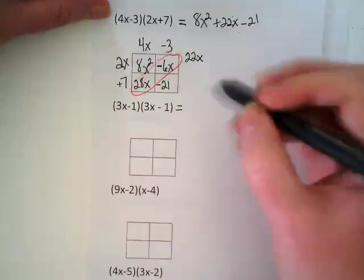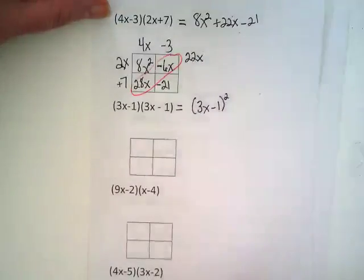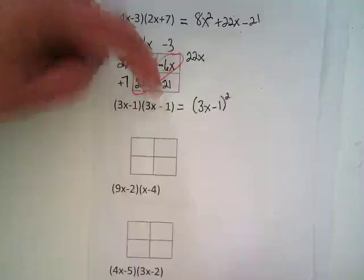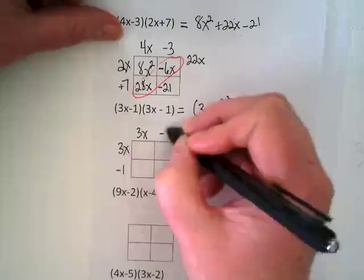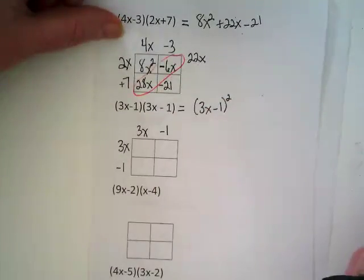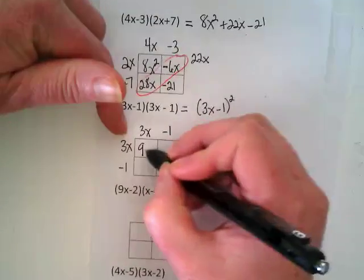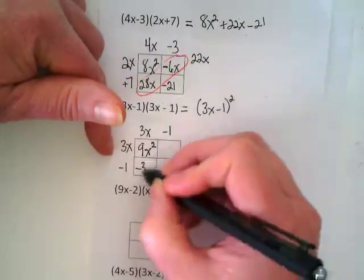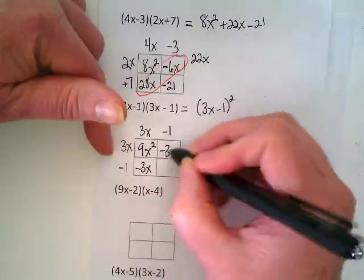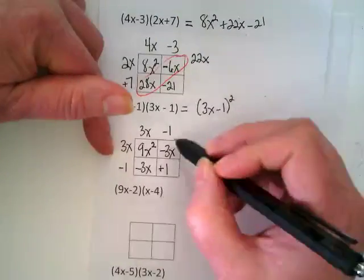This one could be rewritten as 3X minus 1 squared, because both polynomials are the same. So we're going to write the terms on the outside. We're then going to multiply for each box. First box is going to be 9X squared. Negative 3X. Negative 3X. Positive 1.